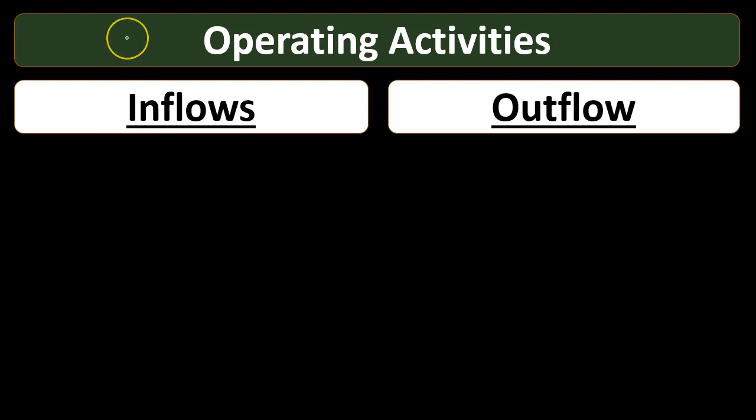We'll start off with operating activities, looking at the major components of the cash flows within them. We'll talk about inflows and outflows — remember, we're talking about cash: the cash that goes into the company and the cash that goes out. Operating activities is going to be similar to thinking about the income statement on a cash basis.